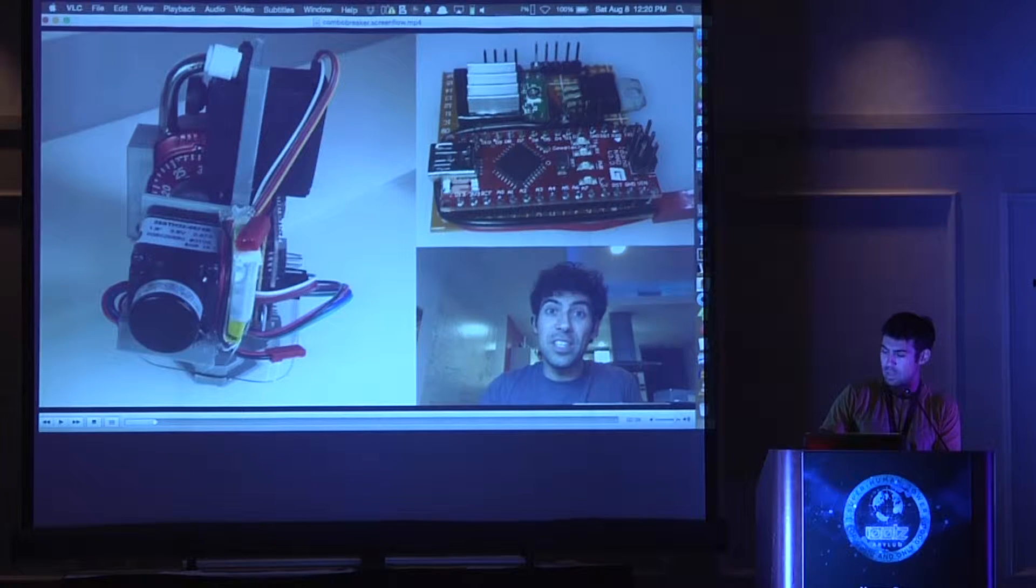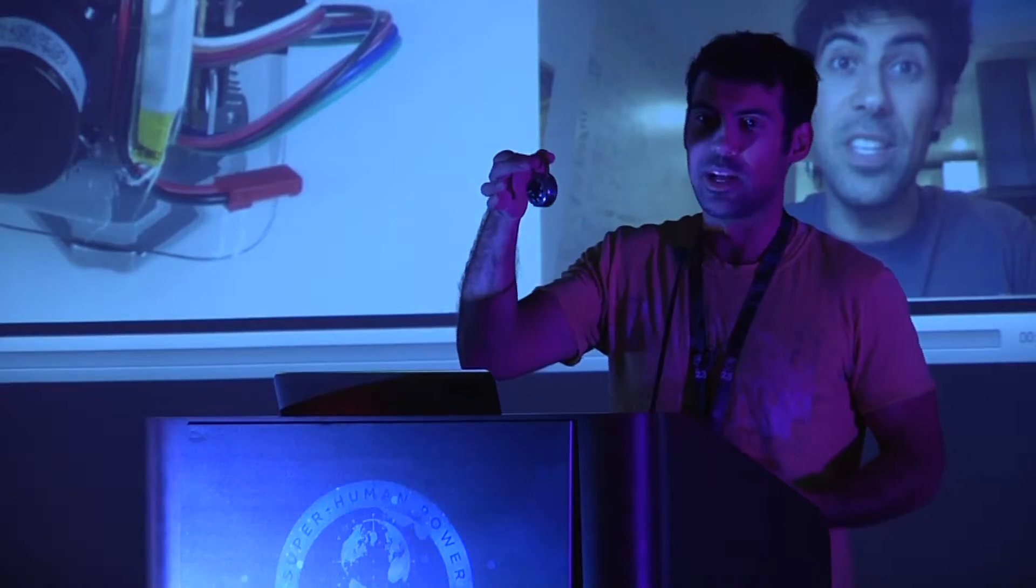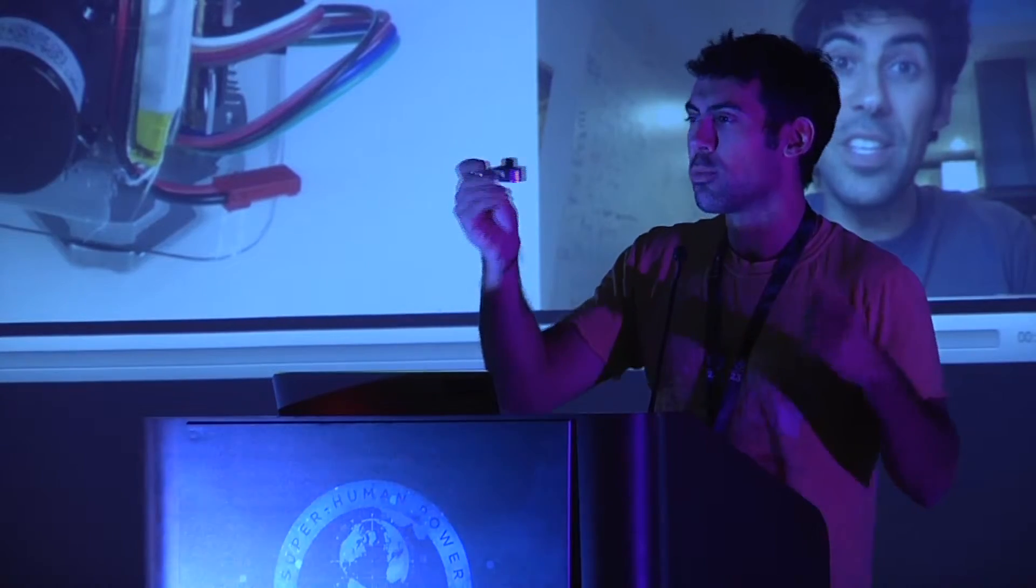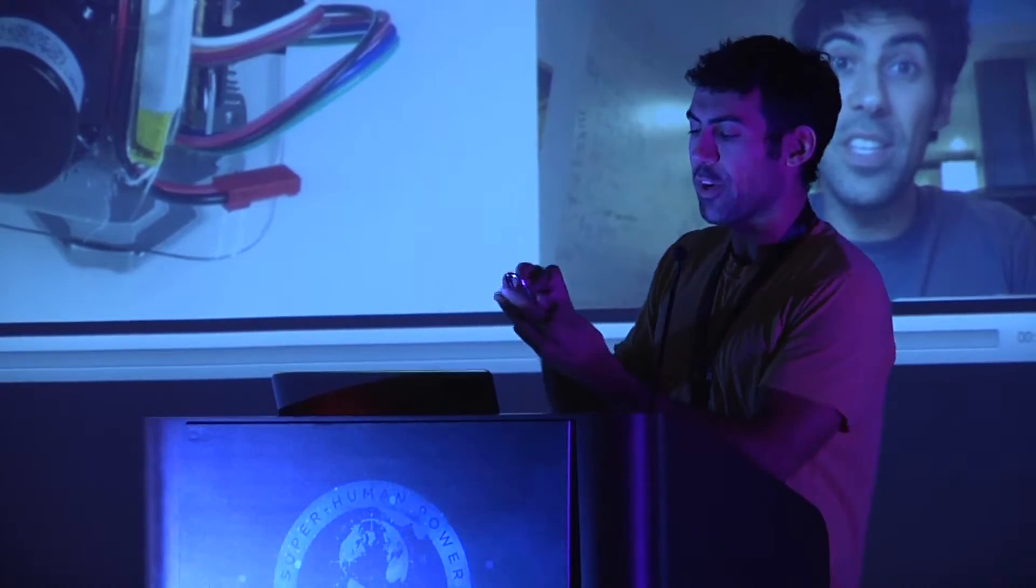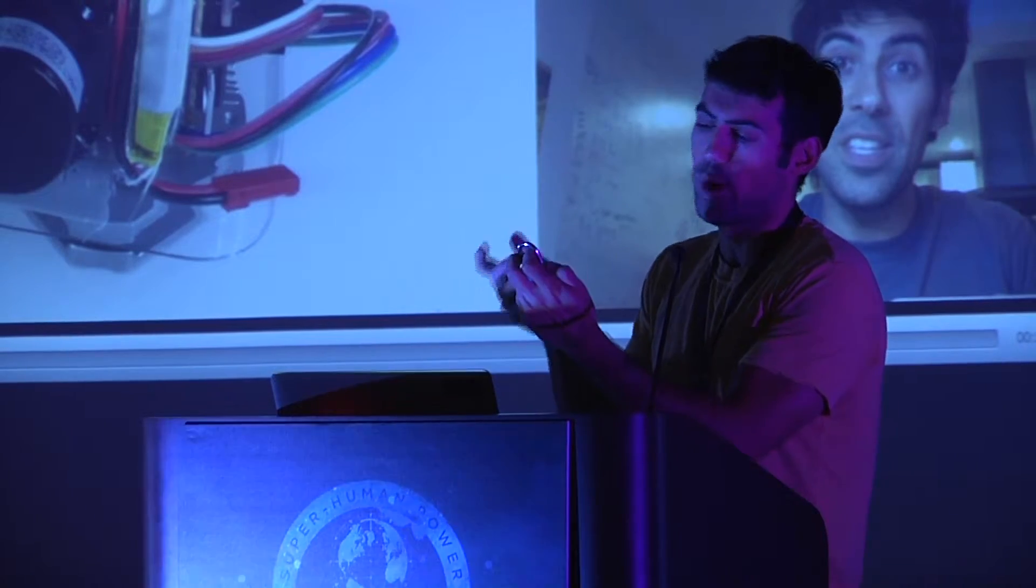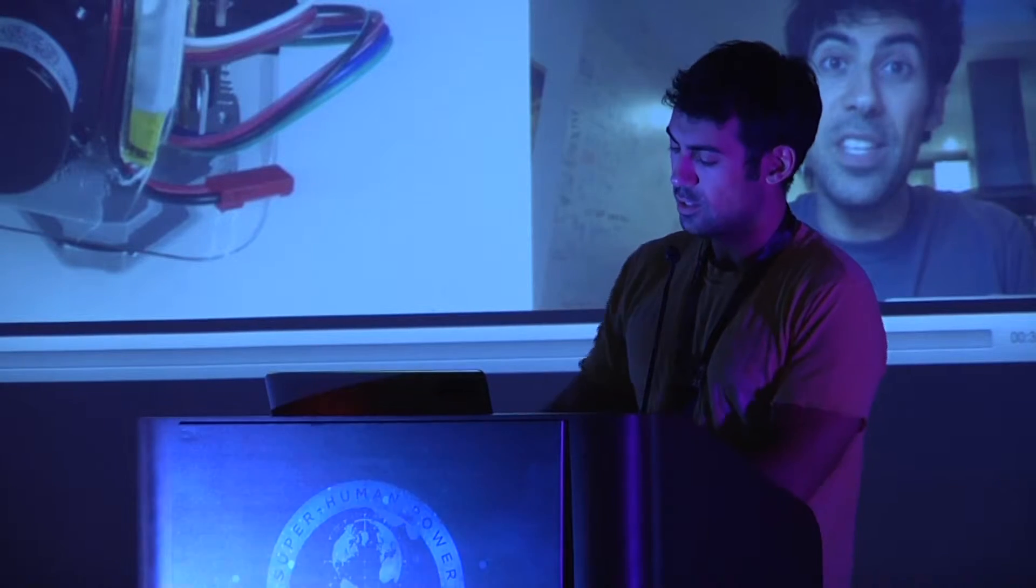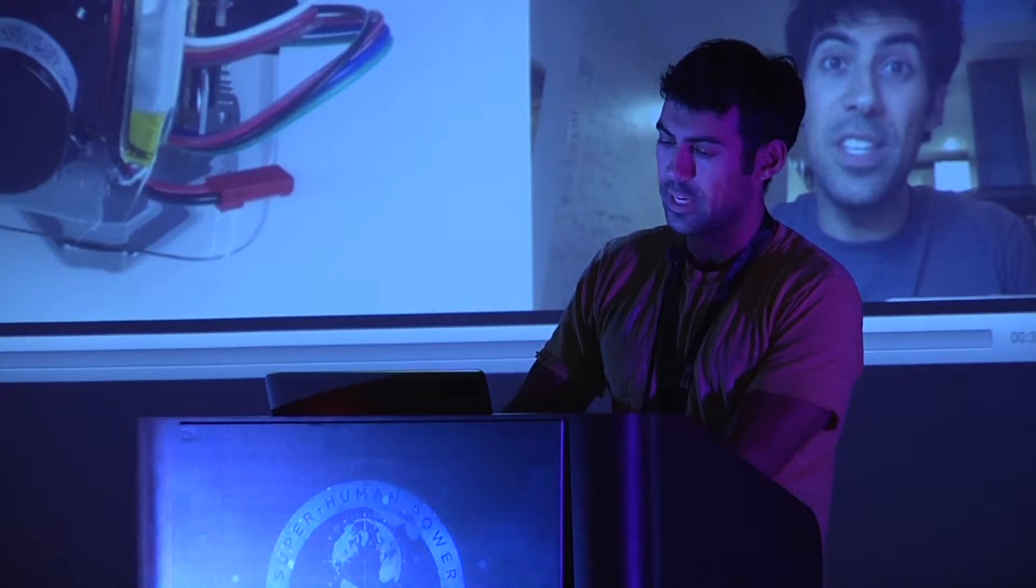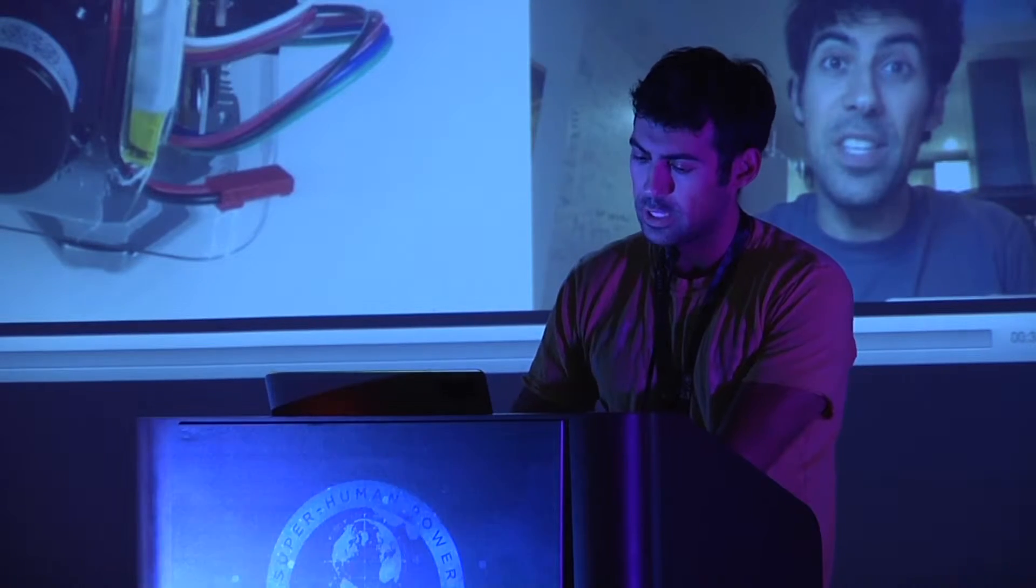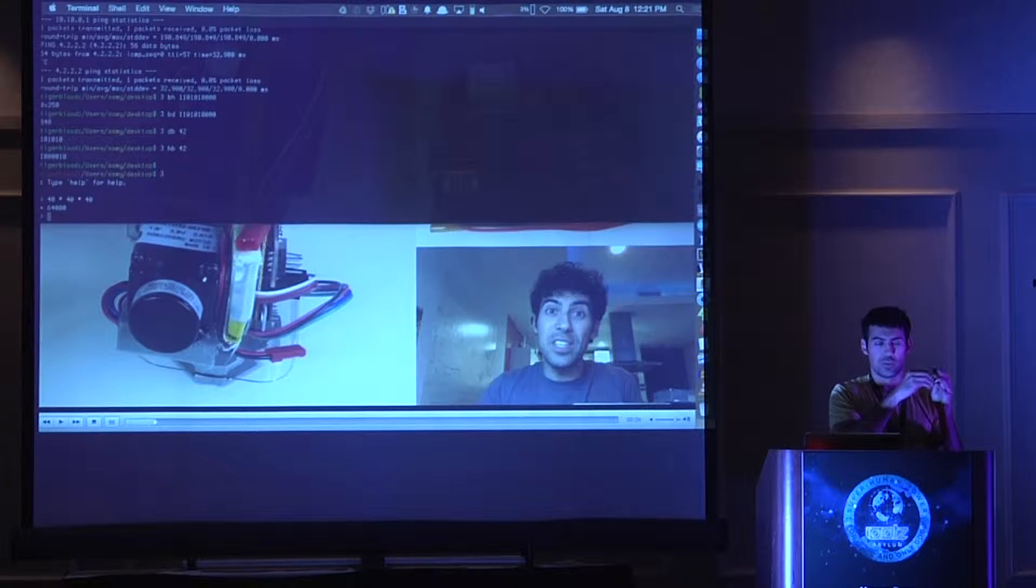We'll start with how the basics work. We're starting with master combo locks. Everyone see these things? Normally you have three different combos you're supposed to enter. You'll turn it right twice to a certain number, to the left, and then to the right. There's 40 digits, so because there's three numbers that you have to enter, that means there's 40 times 40 times 40, 64,000 possibilities.